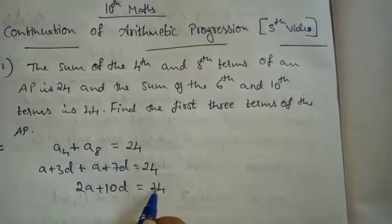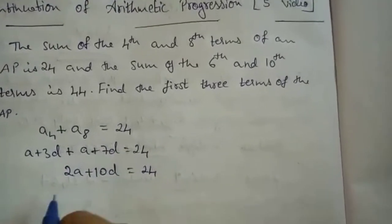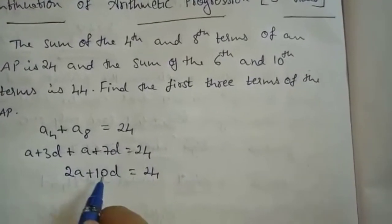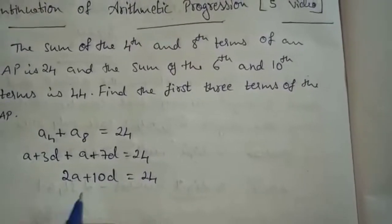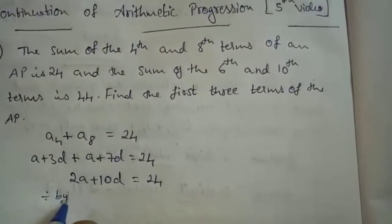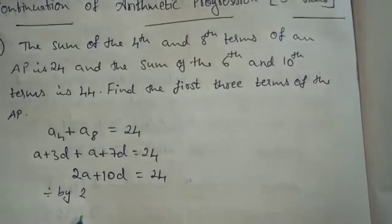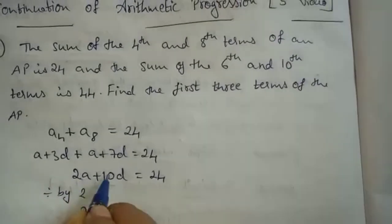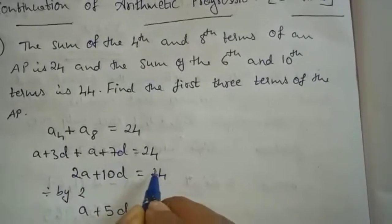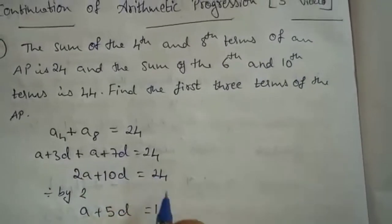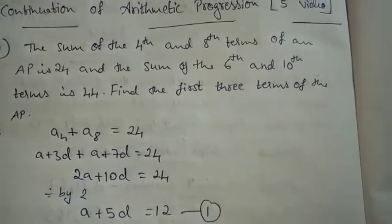Now all these are divisible by 2 — 2A, 10D, and 24 are multiples of 2. So divide by 2. What you will get? A plus 5D equals to 12. Take this as equation 1.